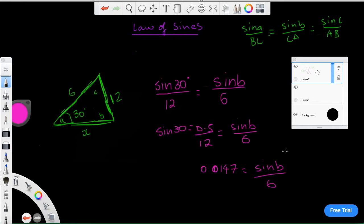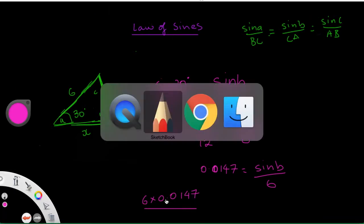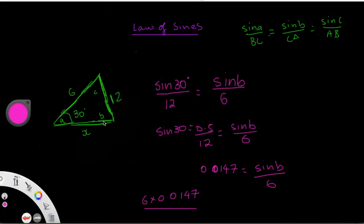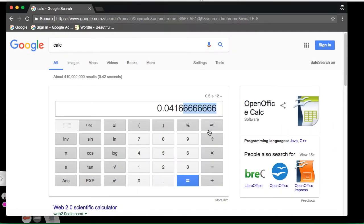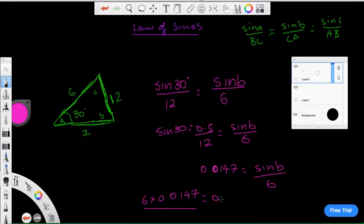Now how do we figure the rest out? Well, this is simple algebra. So we'll go 6 times 0.0147, and then we'll just work out the inverse sine. So let's do that. 6 times 0.0147, that equals 0.882. And now we just need to figure out the inverse sine.